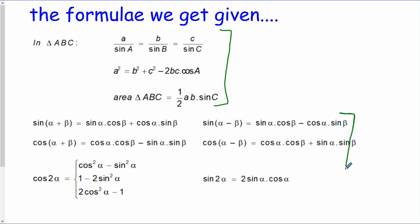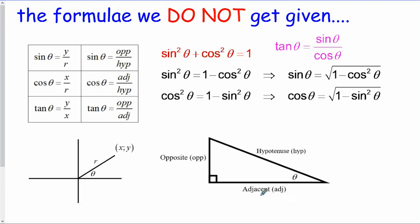What's significant is the number of formulae that we don't get given, that one really does need to know. One needs to know your trig ratio definitions both in x, y and r form for use in the Cartesian plane, but also in opposite, hypotenuse and adjacent form for use in triangles.